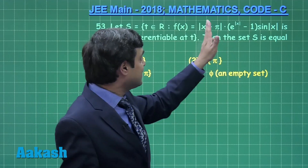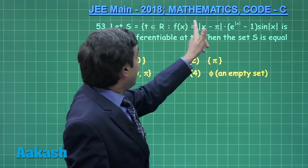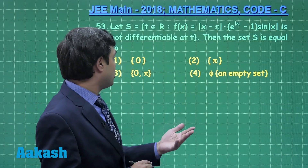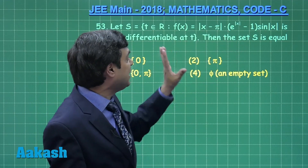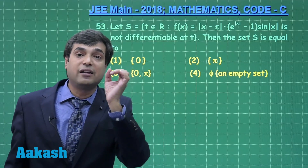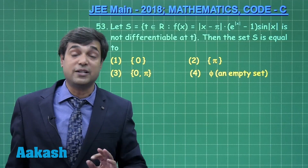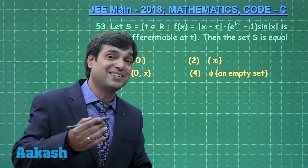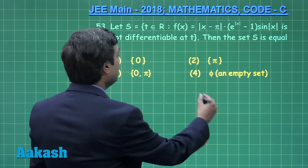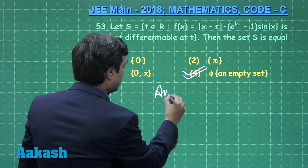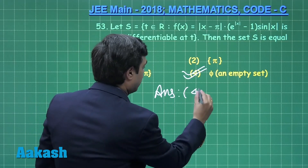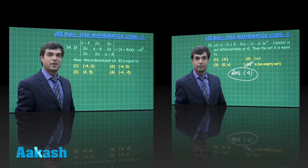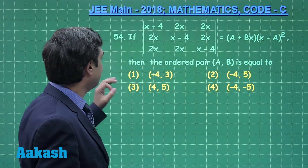So x = π and x = 0 are repeated roots. At repeated roots, the function becomes continuous as well as differentiable, so the function is clearly differentiable at both these points. Therefore the required set S is empty, and the correct answer is option 4.